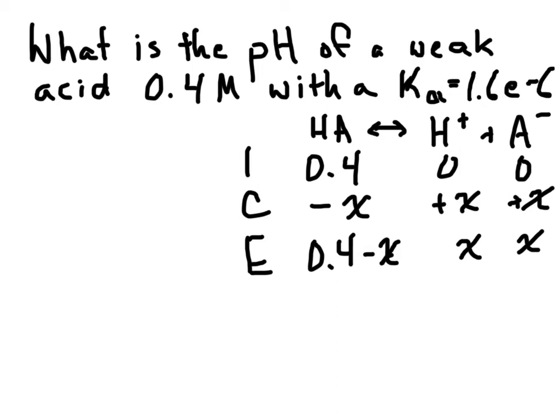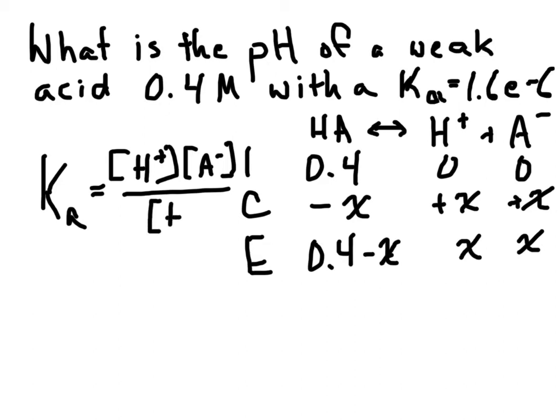So once we have that, we can plug that into our equilibrium expression. Just a reminder that our equilibrium expression, Ka, is going to be equal to the concentration of our products, which would be the hydrogen ions and the anion, whatever that is, over the concentration of our reactant, which is the acid itself. Remember that we can ignore water. We don't have to put water into the equilibrium expression because water doesn't have a concentration. It's 100% and therefore has a concentration virtually of 1. So it would just be 1 and doesn't change anything.